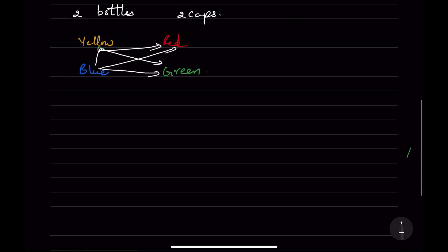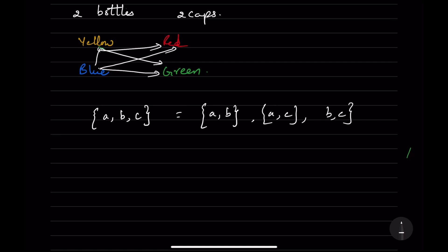Now for combinations, suppose you are having three alphabets — A, B, C — and we have to arrange them taking two together. You can write AB, AC, and BC. Taking two at a time, the possible selections are AB, AC, and BC. This is the number of possible selections of all sets of objects from three given alphabets. This is how combinations work.